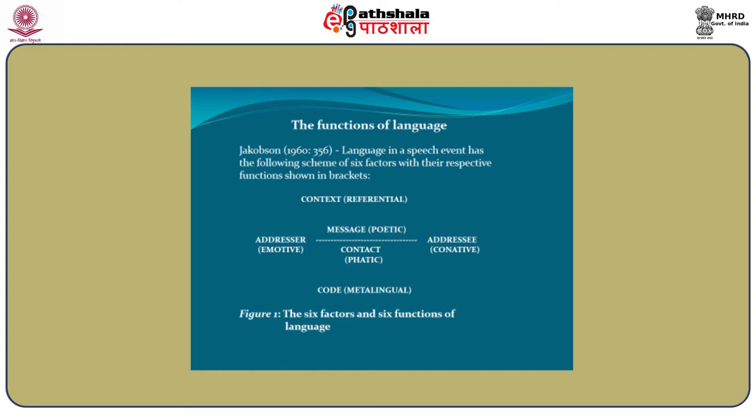Jakobson does not oppose the Prague School concept of literary text as a functional structure, but he insists as a linguist that the difference between poetic and non-poetic text can be explained purely in linguistic terms. For him, poetics deals primarily with the question of what makes a verbal message a work of art. He argues that this perspective is an integral part of linguistics — a reference to his closing statement 'Linguistics and Poetics' in the book Style and Language edited by Sebeok. This is a classic article which you all must read.